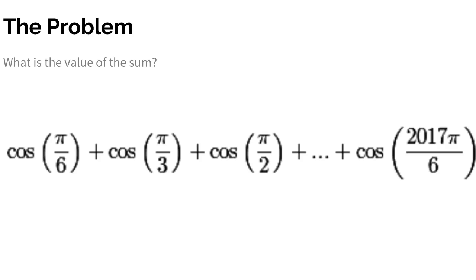We are solving problem 3 today, and what is the value of the sum cos π/6 plus cos π/3 plus cos π/2, all the way up to 2017π/6. So the first thing we want to figure out is what is the pattern between these terms. Whenever I see π/6, π/3, π/2, you automatically should recognize that that's the difference of π/6 between each term.